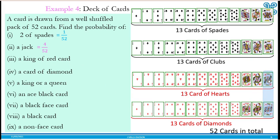King of red card, so these are the king of red cards, 2 over 52. A card of diamonds...